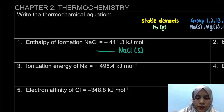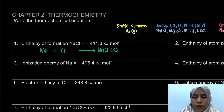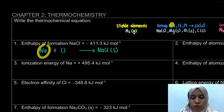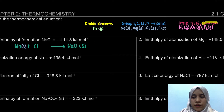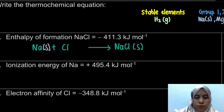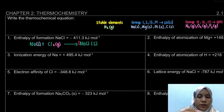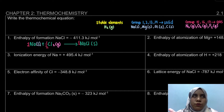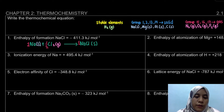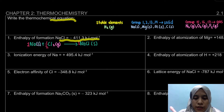For the enthalpy of formation of NaCl, it must be formed from its most stable elements. Sodium is Group 1 — it is solid, so Na(s). Chlorine is Group 17 — it is a gas and diatomic, so Cl₂(g). The equation is: Na(s) + ½Cl₂(g) → NaCl(s). One mole of NaCl is the product, so chlorine is ½.